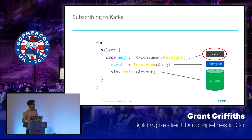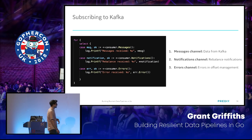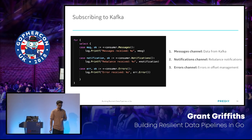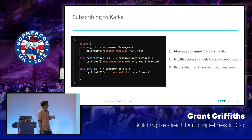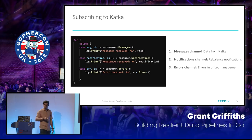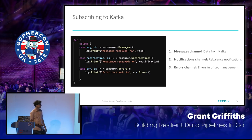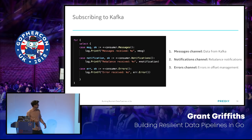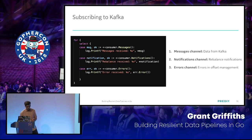There are three main channels for the Sarama Cluster library you want to listen to when subscribing to your Kafka topic. First is the messages channel — the read-only channel where all raw data from your Kafka topic comes from. Then there's the notifications channel, which carries all rebalance notifications if a topic has rebalanced. And then there's an errors channel for all errors that happen with offset management — if you fail to mark an offset, that comes to this channel.